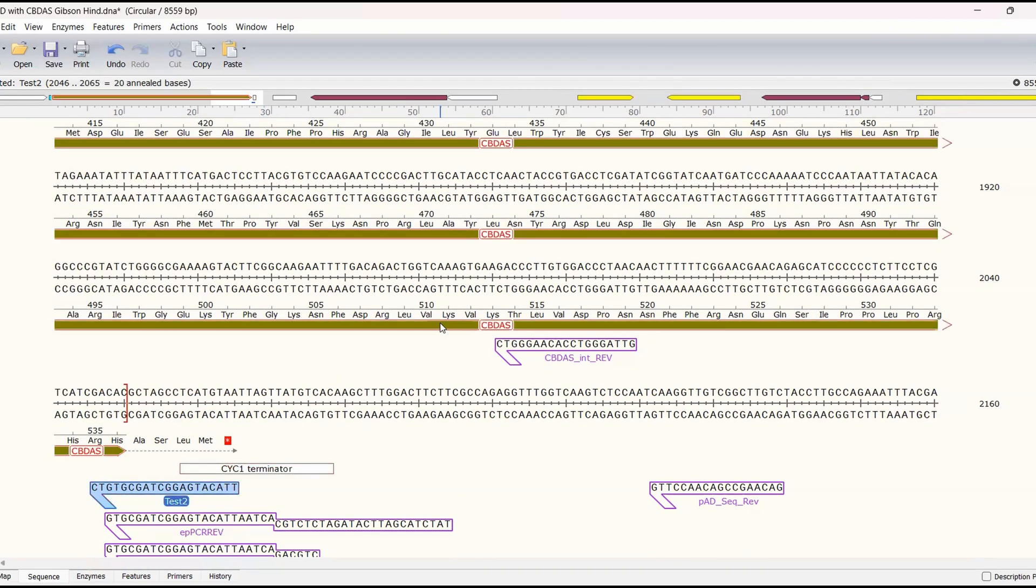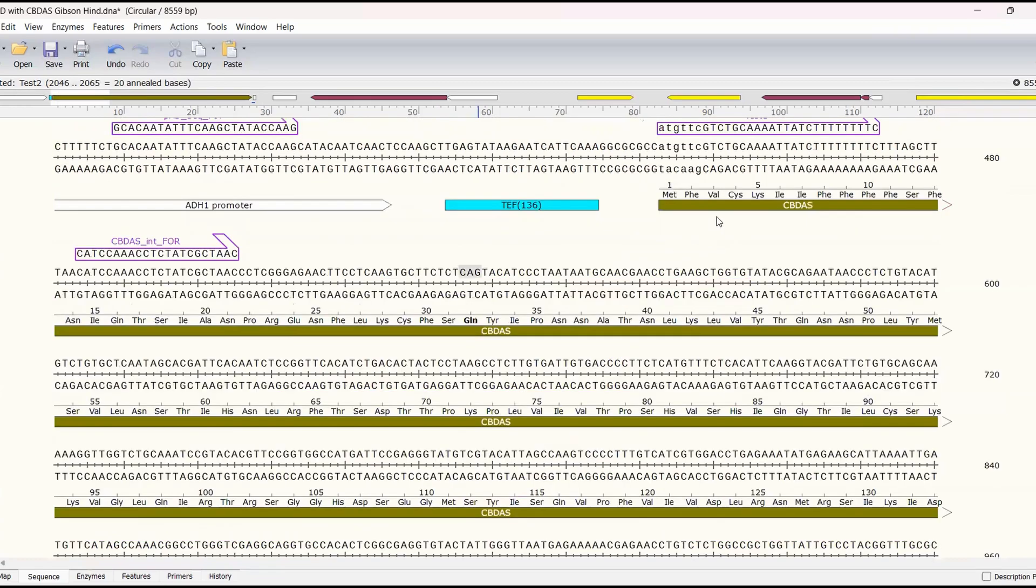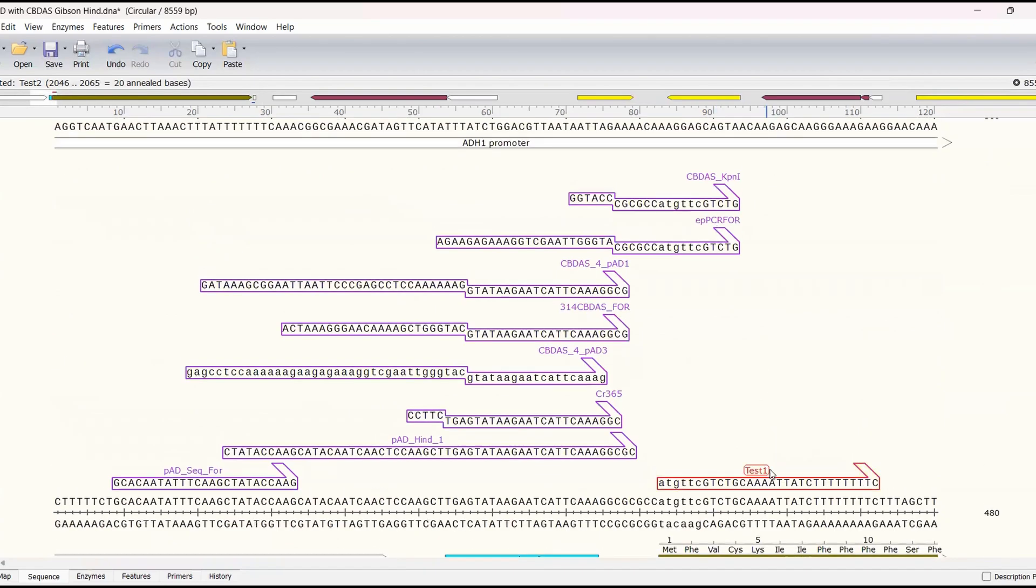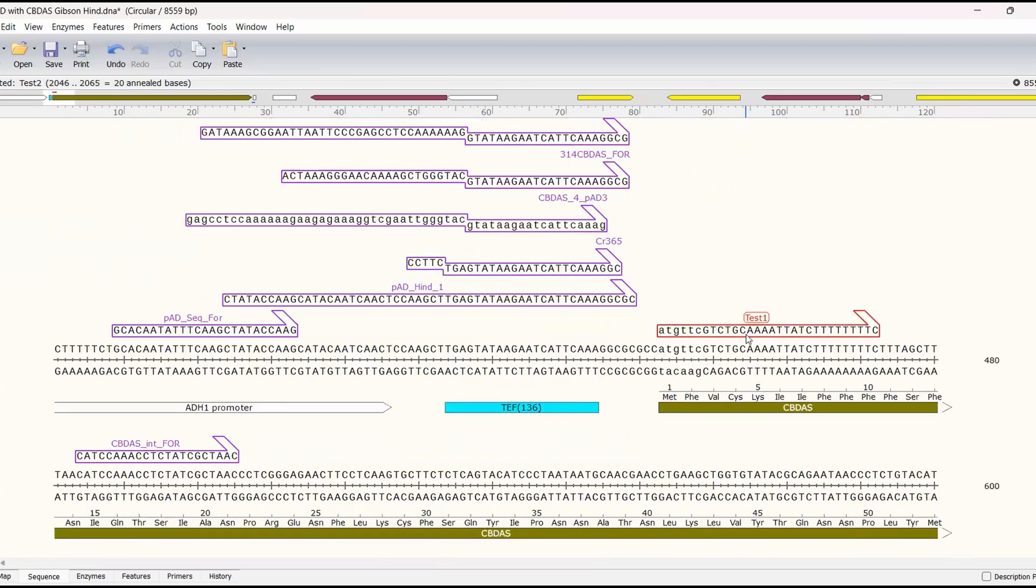So you can copy your reverse primer, copy your forward primer and put them into the calculator and it will probably also tell you about any warnings about secondary structures with the primers as well. And it is important, you might choose a different melting temperature, I chose 57 here that's usually what I go with but if you use a different melting temperature just make sure your forward and reverse primers have the same melting temperature. So that's everything with designing primers. If you have any questions please leave them in the comments below.